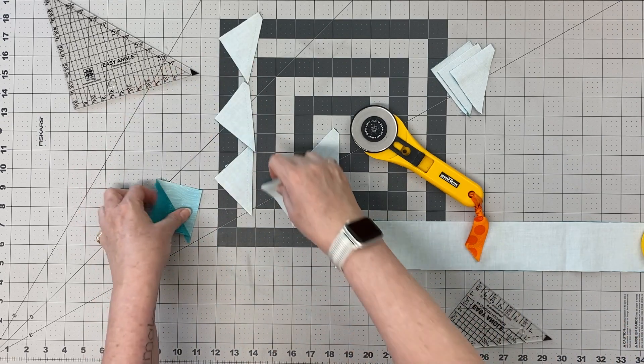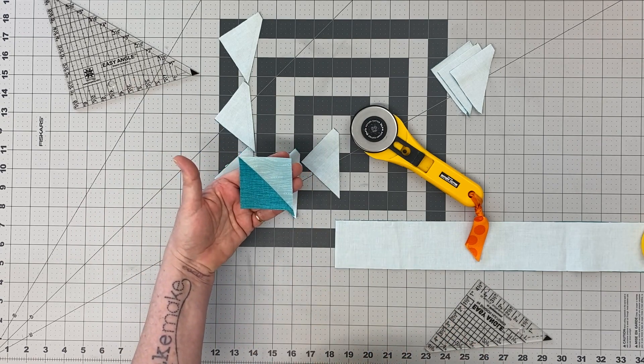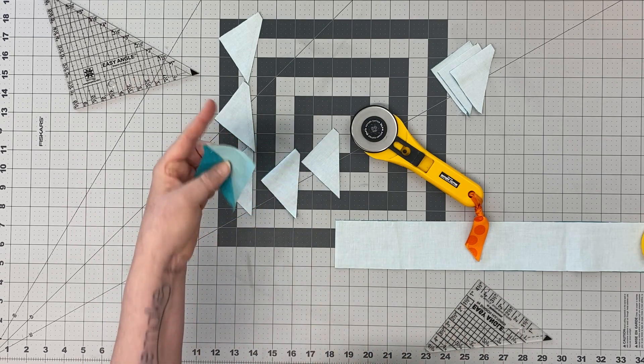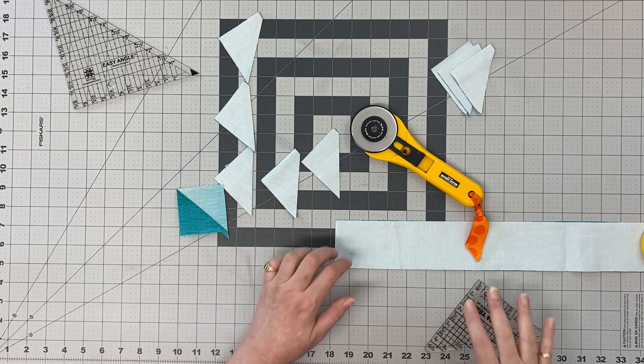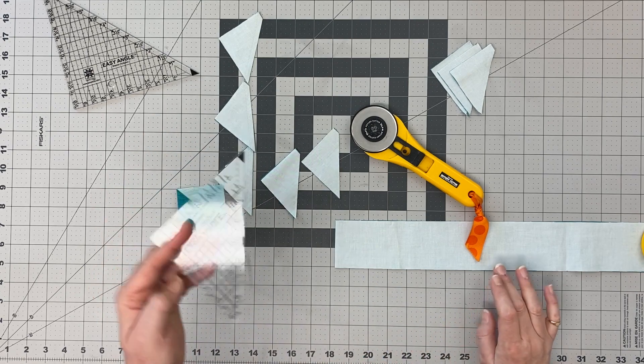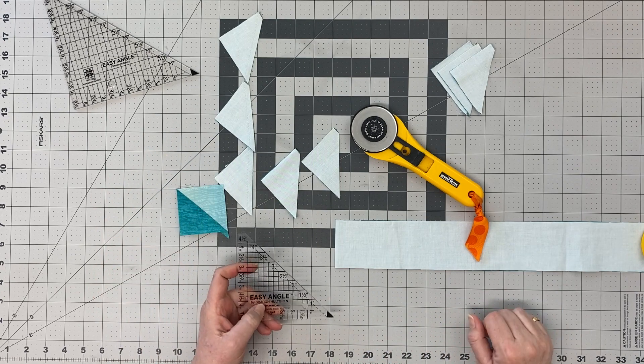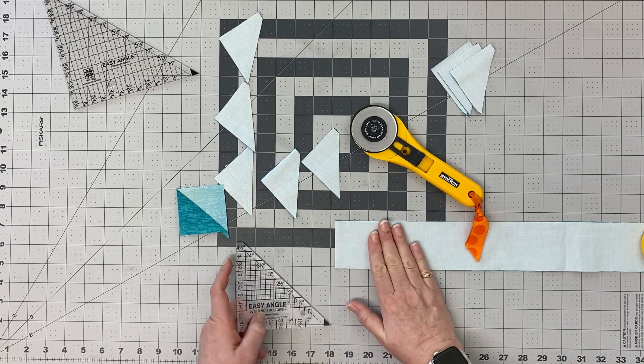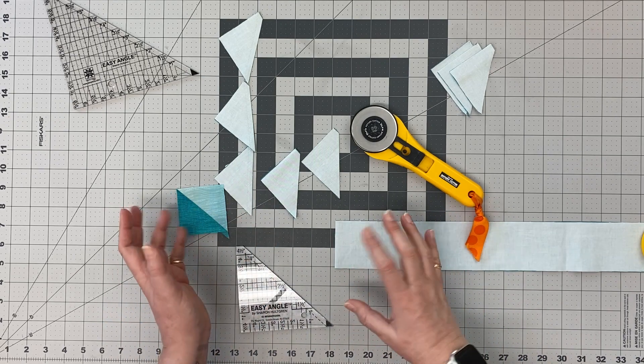you've got your HSTs. Super easy way to do it, but you do have to have a relatively accurate quarter inch seam. I find it works best where you're putting squares and triangles of the same size together, so it'll work with any of those. I really think this is kind of an